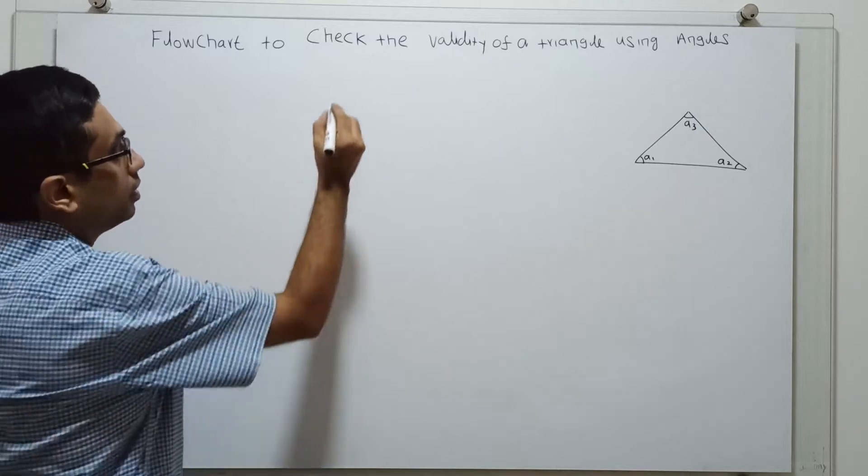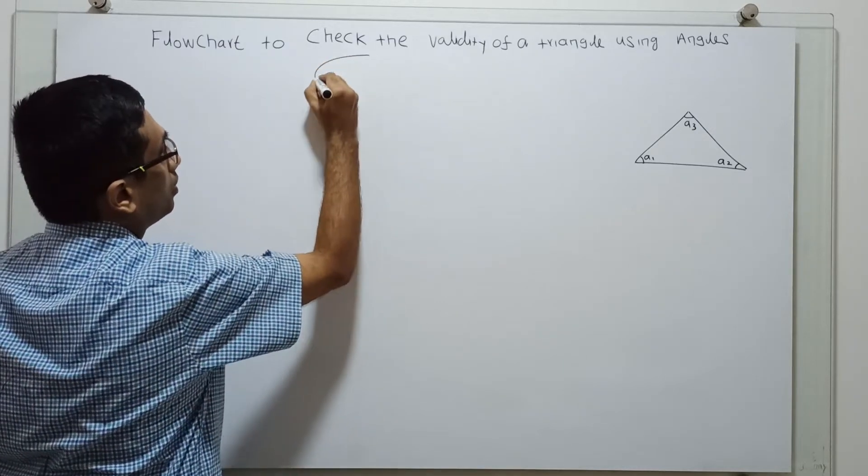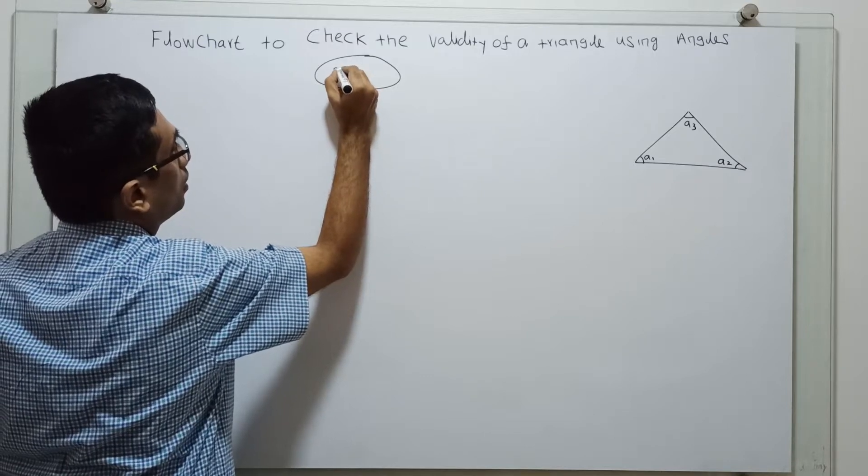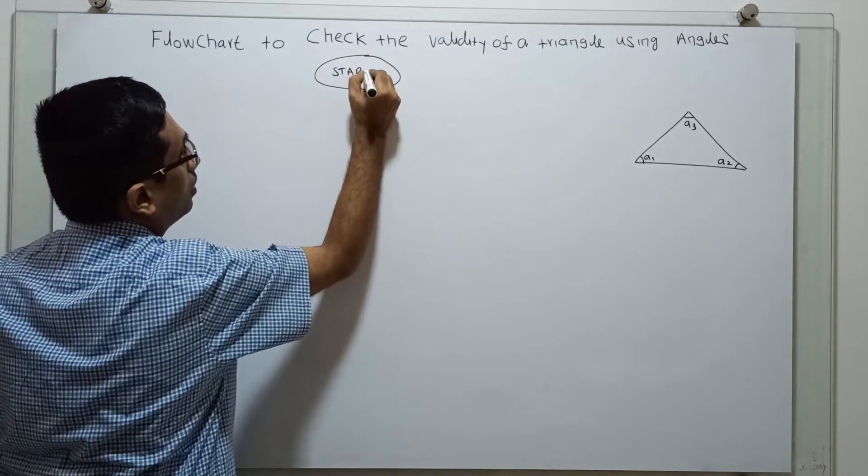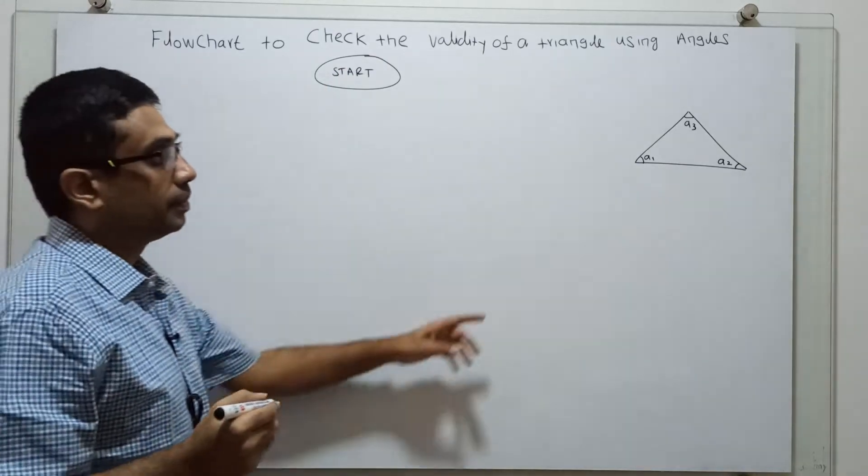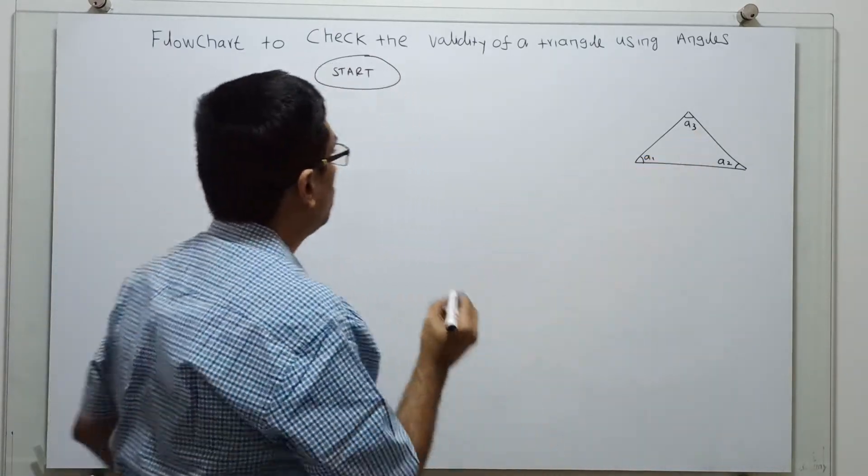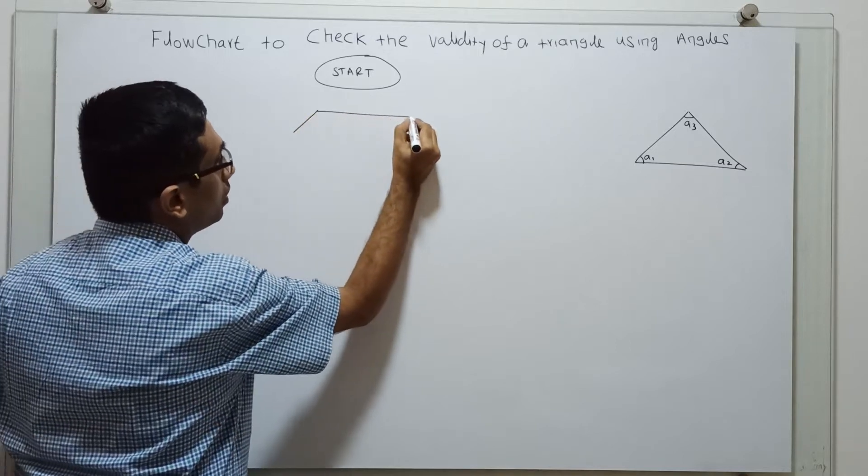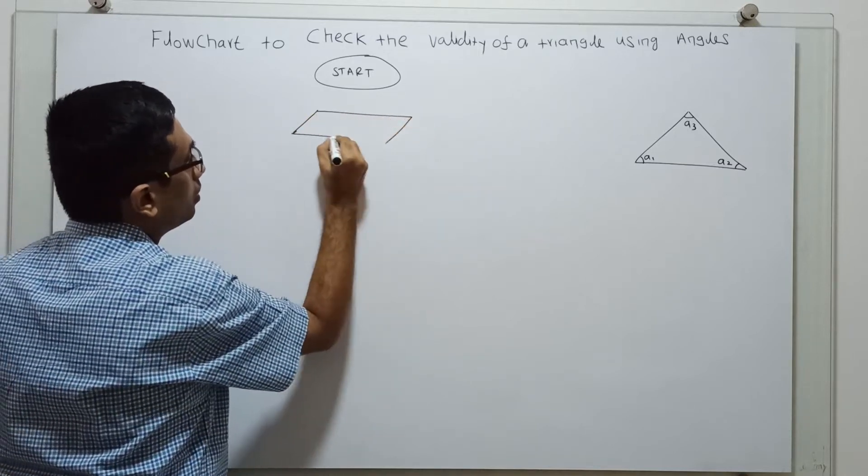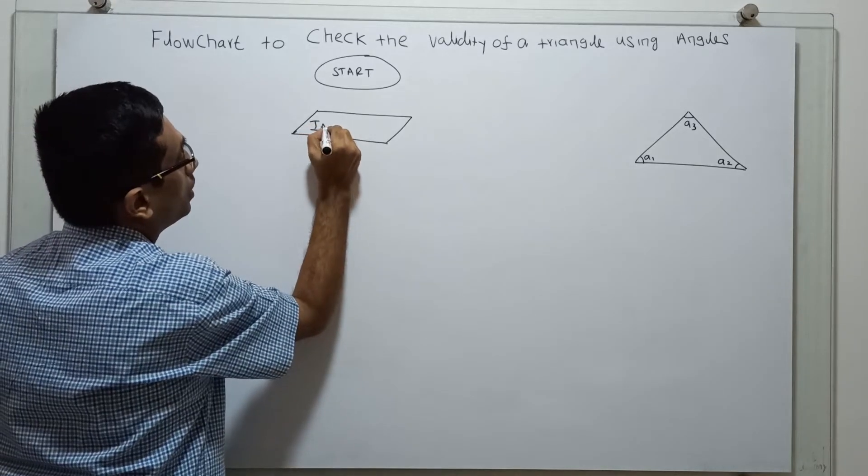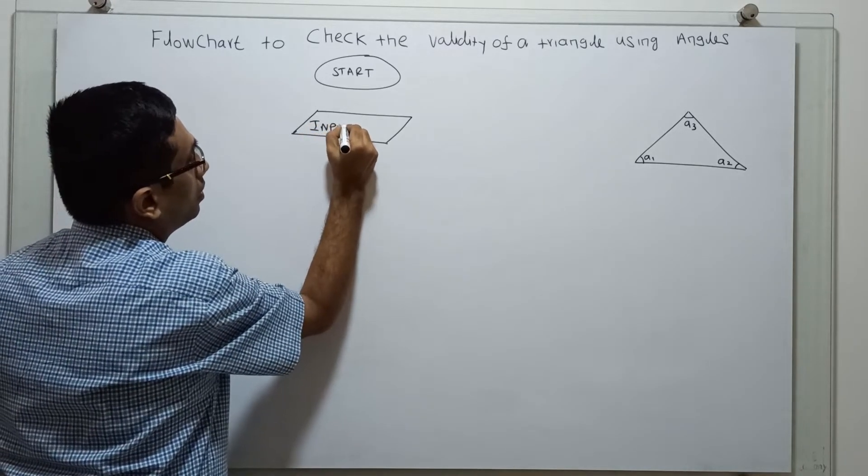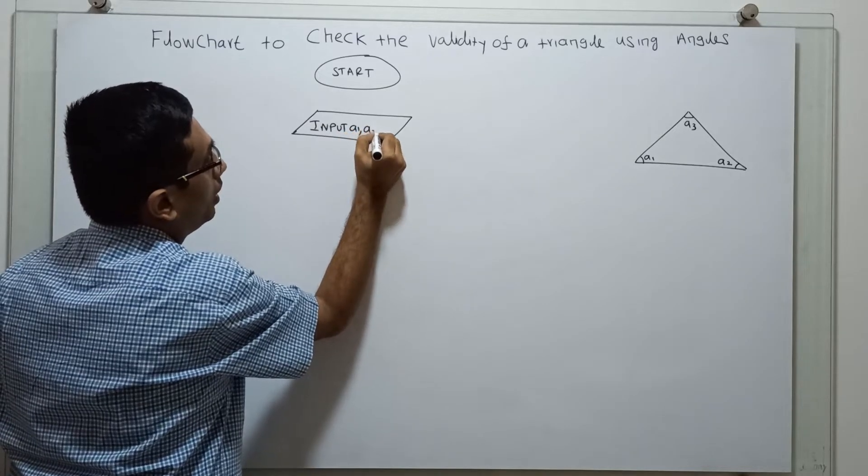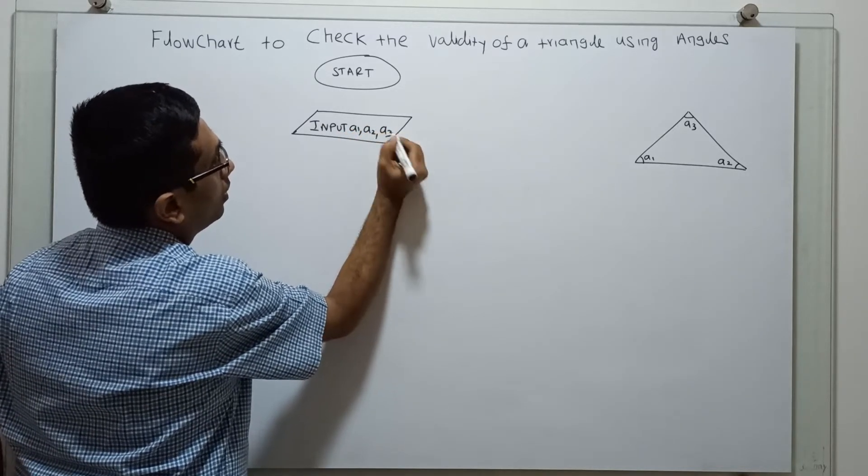So we directly go to the flowchart. Logical start. Start. So we hope to get the angles a1, a2, a3 as input.